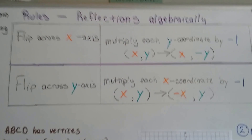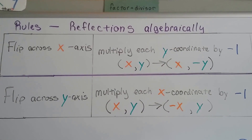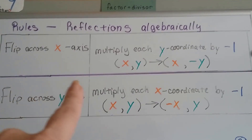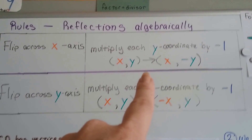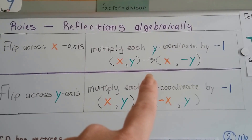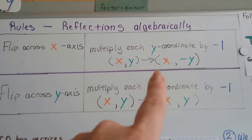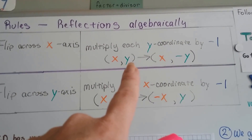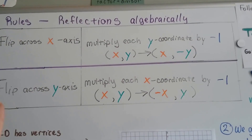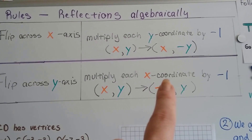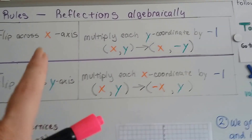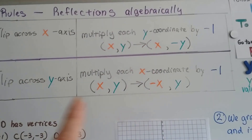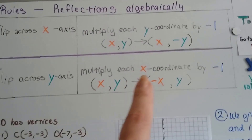Here are the rules for reflections algebraically. If we're going to flip across the x-axis, we multiply each y-coordinate by negative 1. The x and y coordinates will end up becoming (x, -y), because we multiplied the y by negative 1. When we flip across the y-axis, we multiply the x-coordinate by negative 1. Notice: when flipping across the x-axis we multiply the y-coordinate, and when flipping across the y-axis we multiply the x-coordinate — they're opposites.